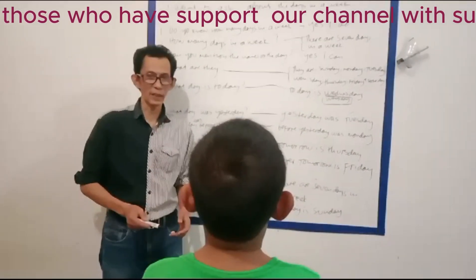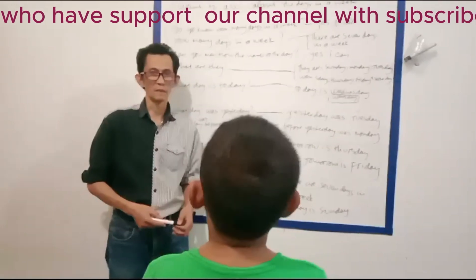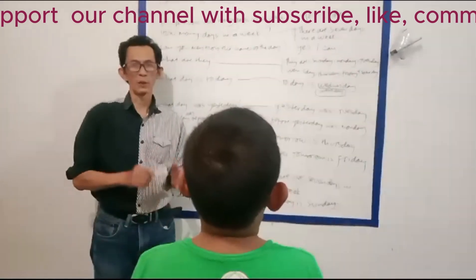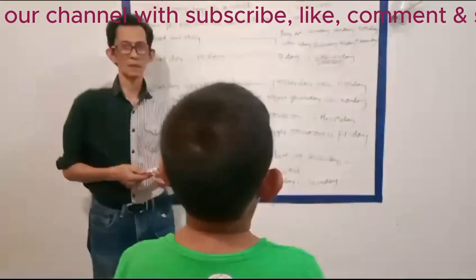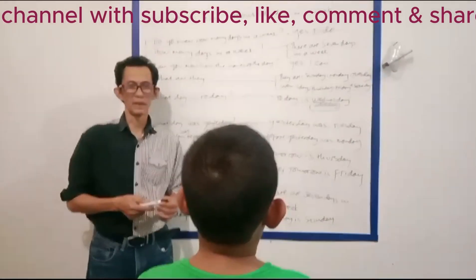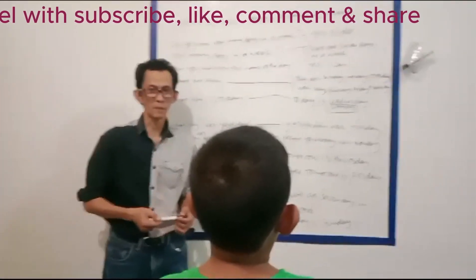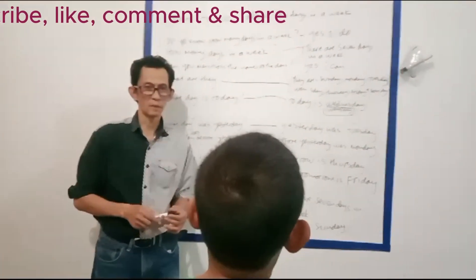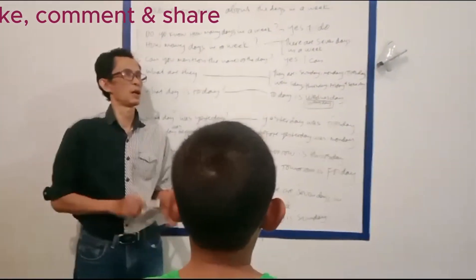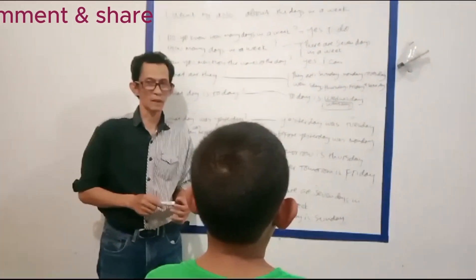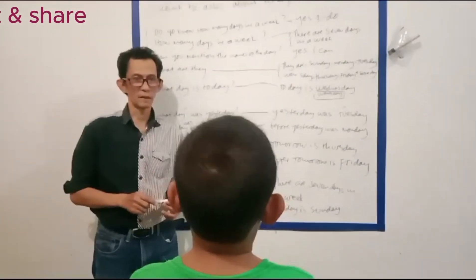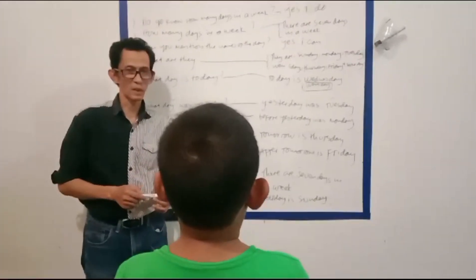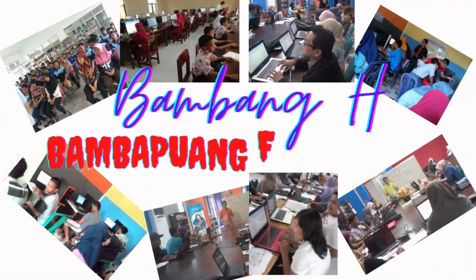What day is tomorrow? Tomorrow is this week. What day is after tomorrow? Tomorrow is Friday. How many days in a week? After a week. What day is going to be? Today is after a week.